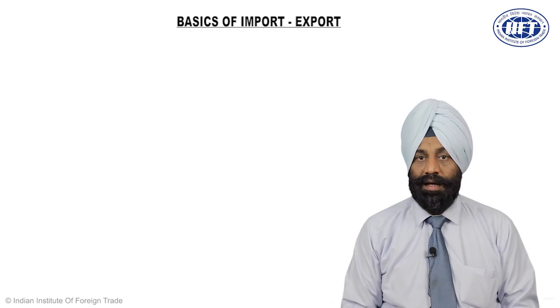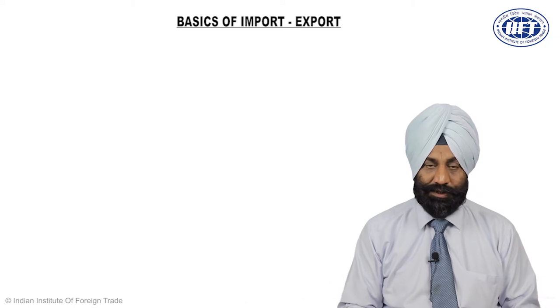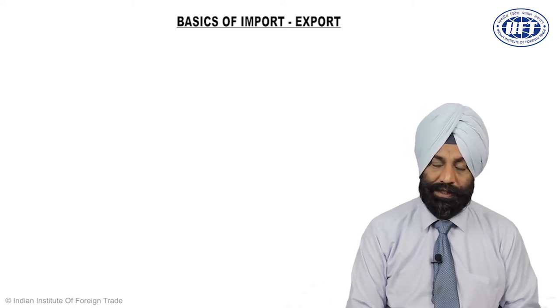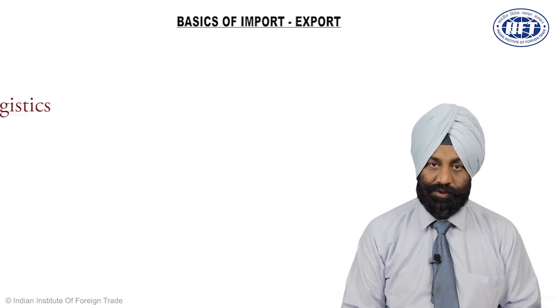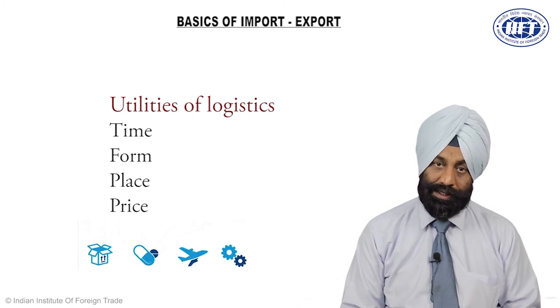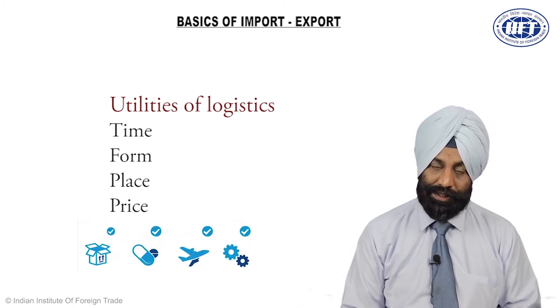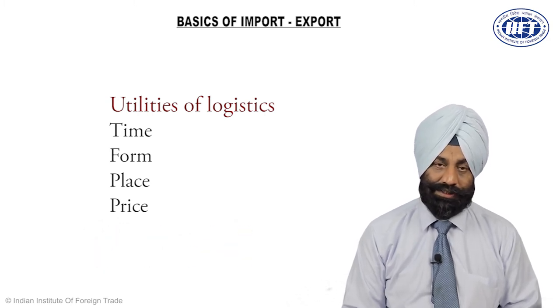In international trade, goods have to move from one country to another. Let us assume goods have to be exported from India and the final destination is the United States of America. Consider the distance involved, the different legal systems of two countries, the different currencies, and the goods that have to move. When goods move, there are issues related to logistics which may be time utility, form utility, place utility, and price utility — four utilities created out of the logistic function.